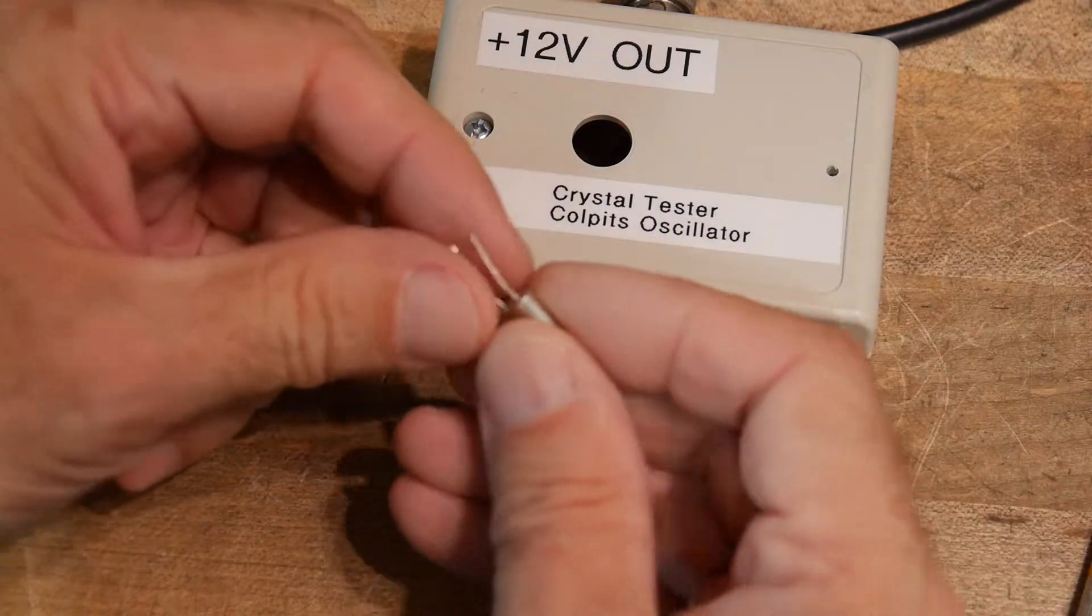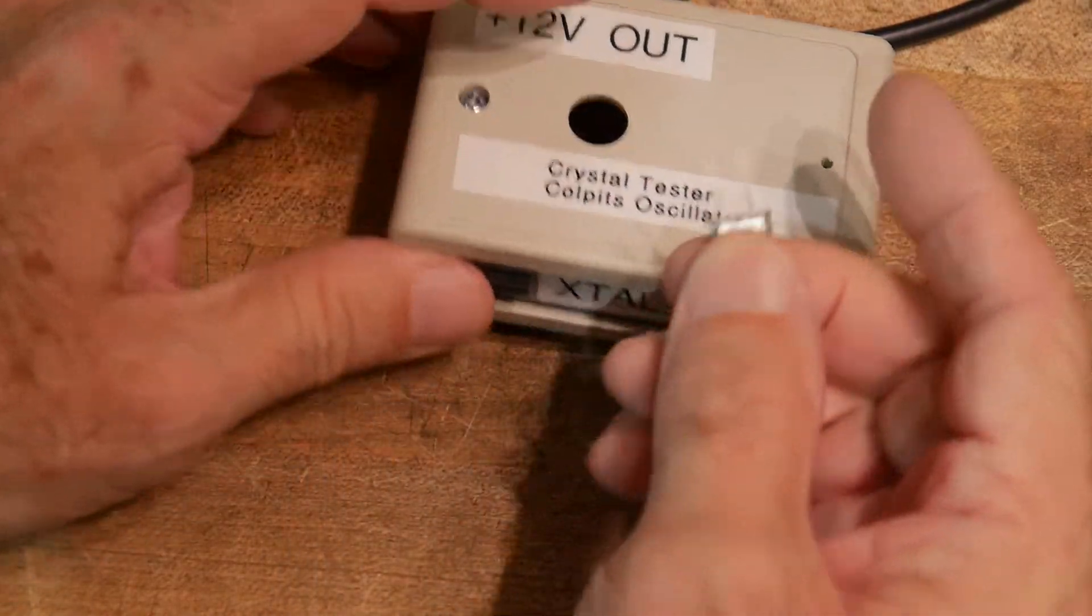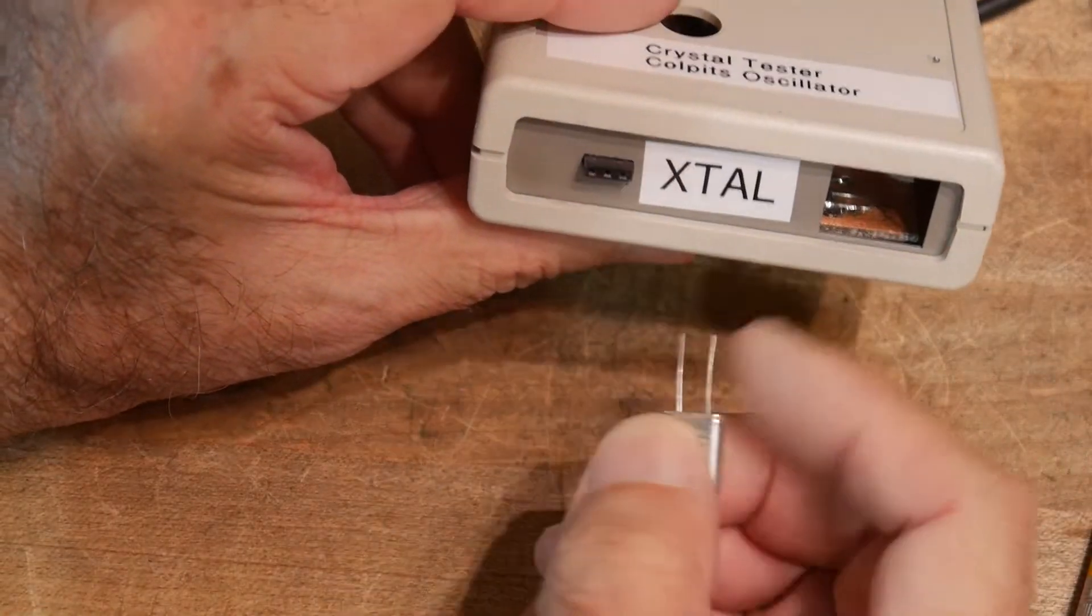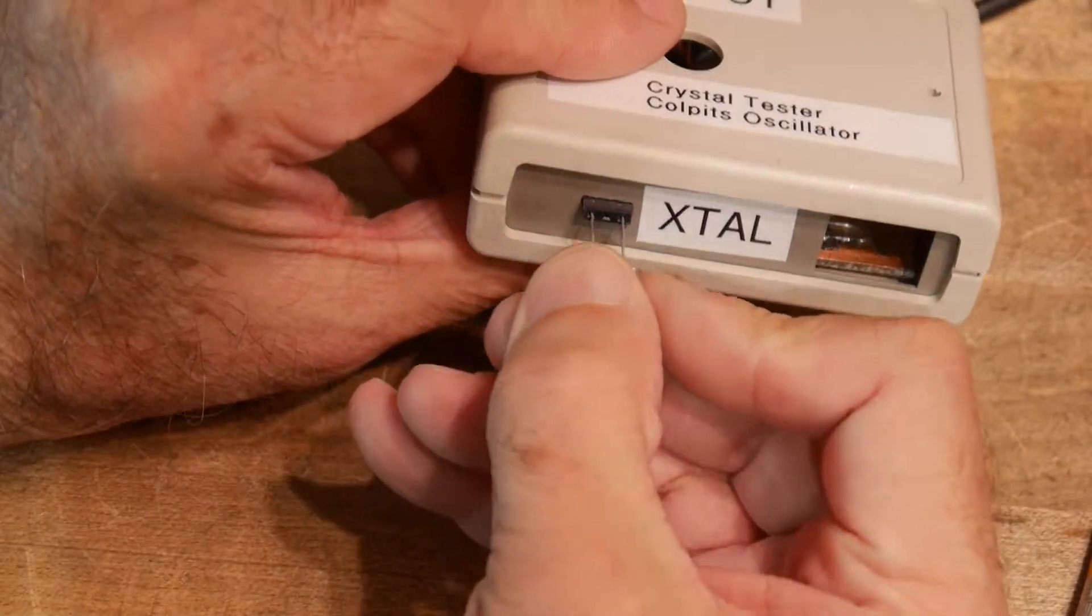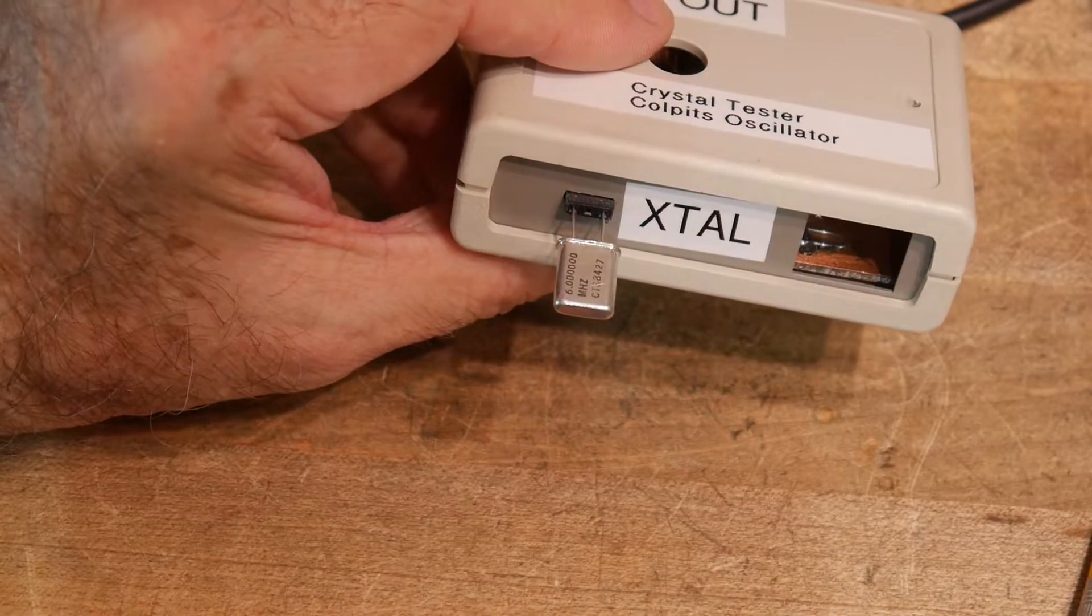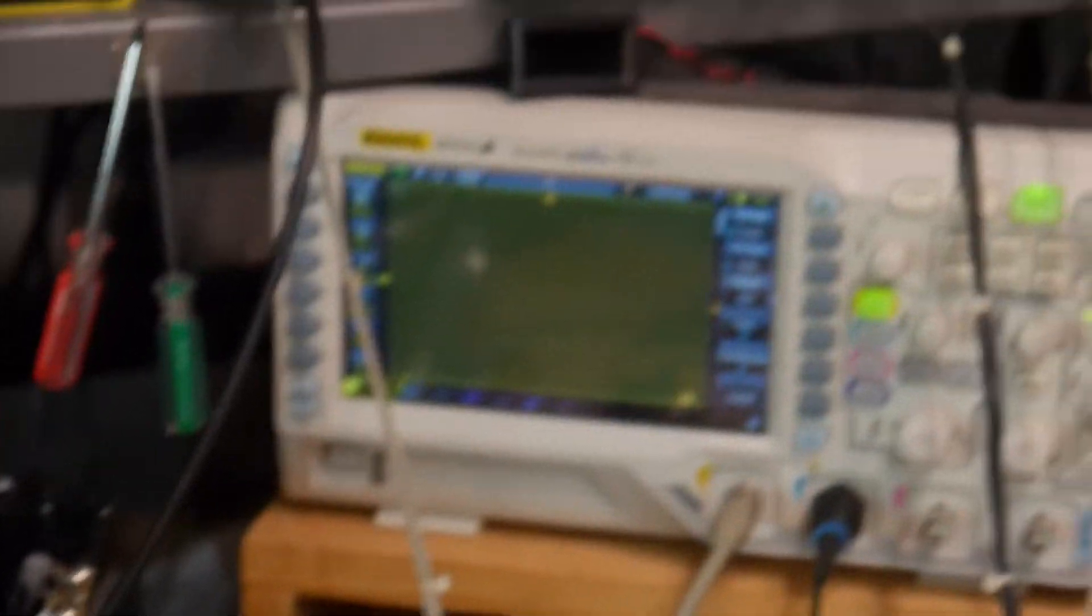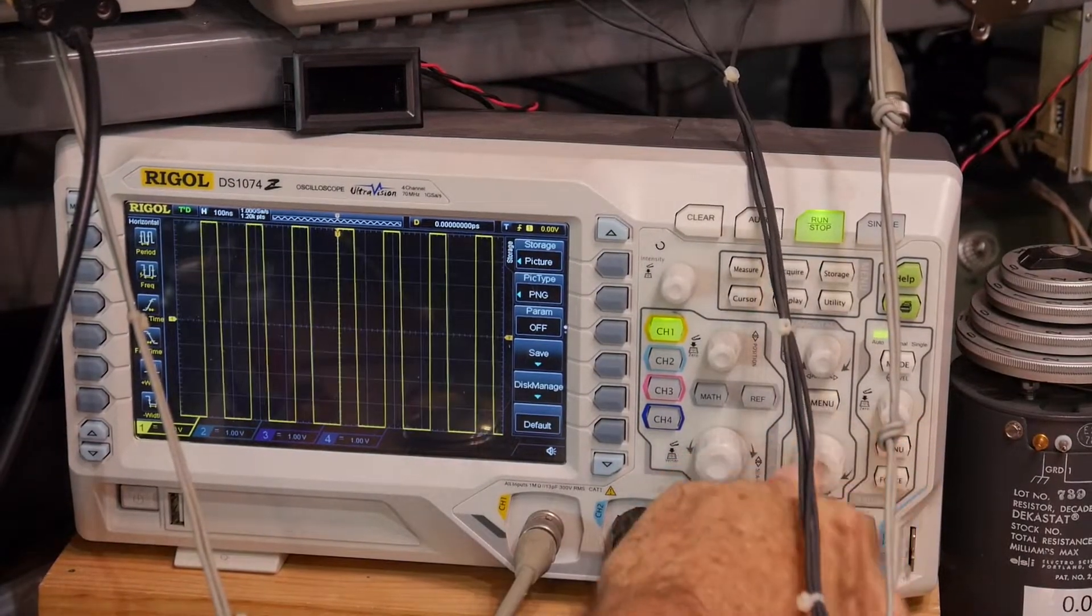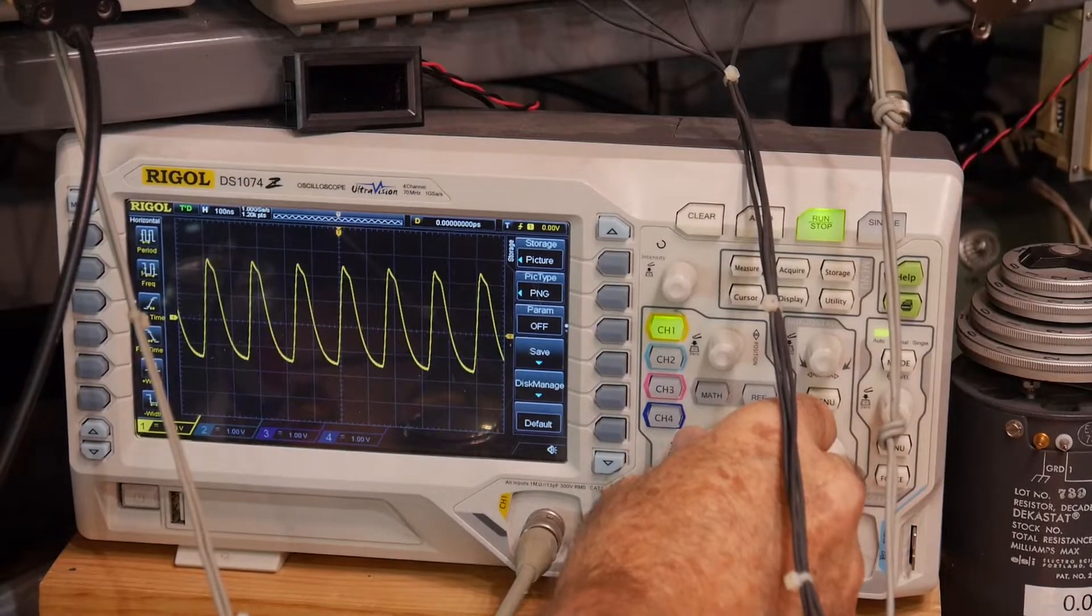And this is a crystal of, let's say, unknown frequency. Here's the little connector. So we'll pop that on there. And go to our oscilloscope. And, whoa, it is oscillating.